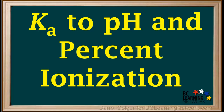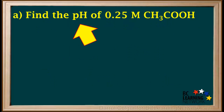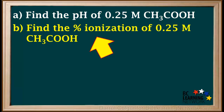Here, we'll show you how to calculate the pH and the percent ionization of a weak acid with a given concentration and a known Ka value. For part A of this question, we're asked to find the pH of a 0.25 molar solution of ethanoic acid, CH3COOH. Part B asks us to find the percent ionization of the acid.